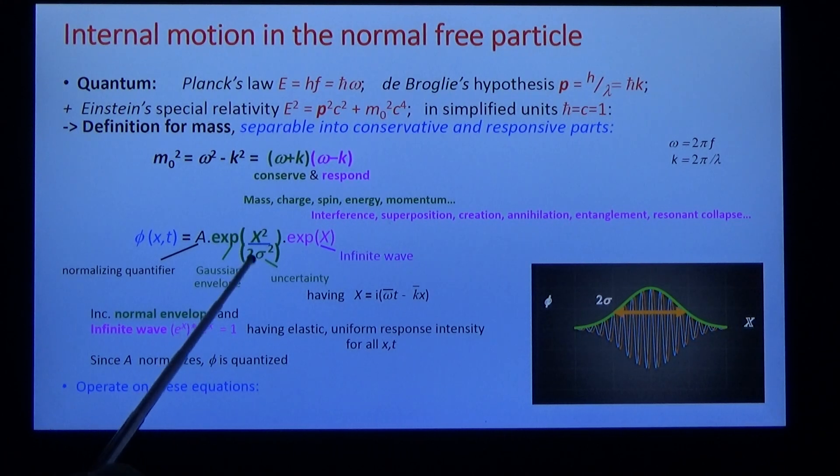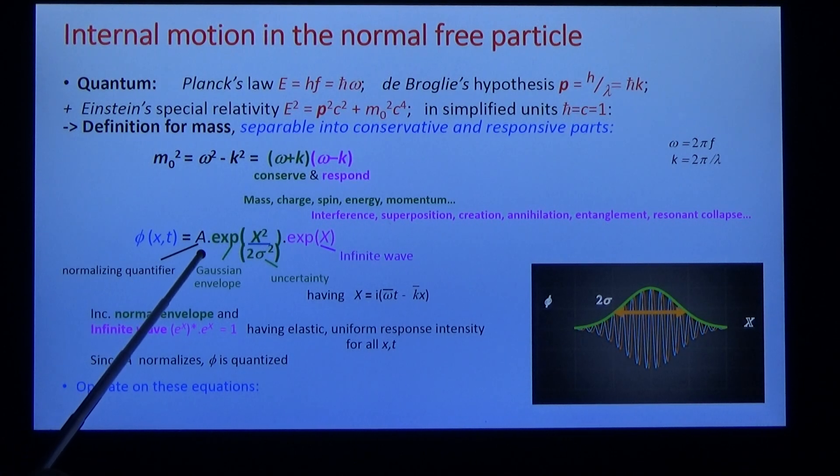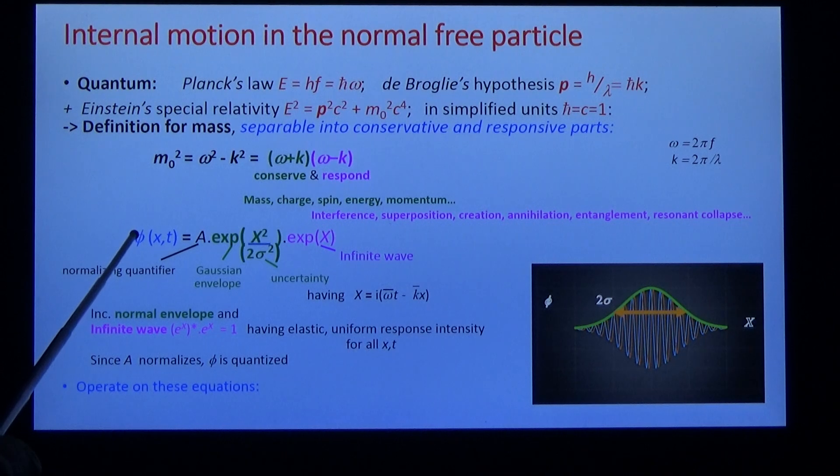Notice that sigma is the half-width, roughly, of the wave packet. And the normalizing quantifier A quantifies the quantum so that you can count them: 1, 2, 3, 4, etc.